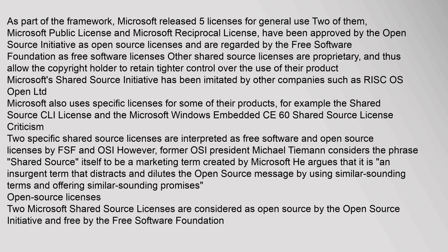As part of the framework, Microsoft released five licenses for general use. Two of them — the Microsoft Public License and Microsoft Reciprocal License — have been approved by the Open Source Initiative as Open Source Licenses and are regarded by the Free Software Foundation as Free Software Licenses. Other Shared Source Licenses are proprietary, and thus allow the copyright holder to retain tighter control over the use of their product.